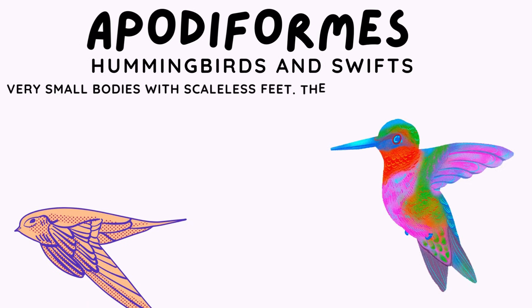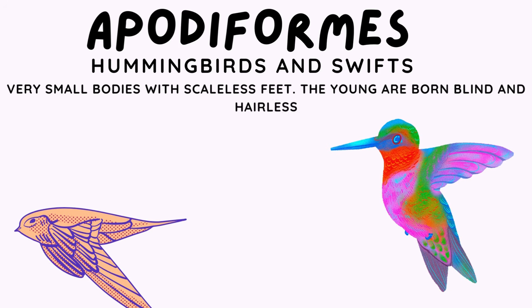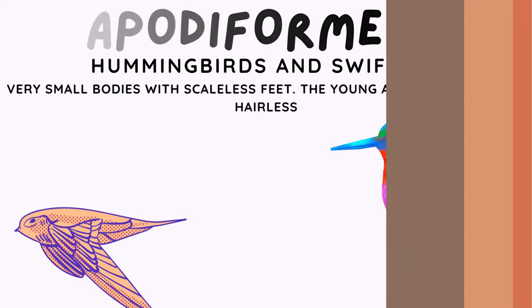Apodiformes. These types of birds include hummingbirds and swifts. They have very small bodies with scaleless feet. The young are born blind and hairless.